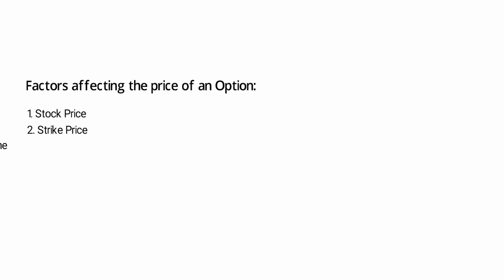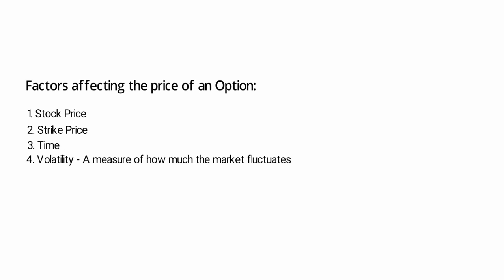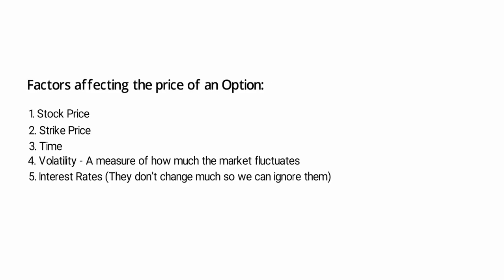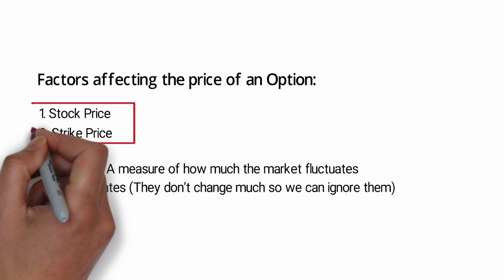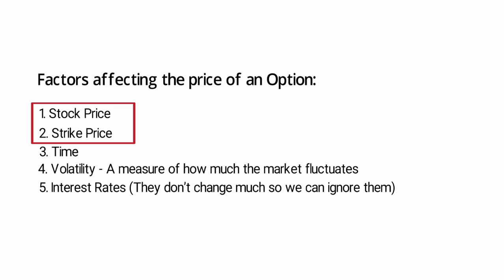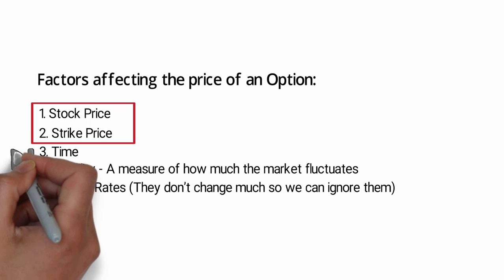There are four major things that affect the price of an option: number one, stock price; number two, strike price; number three, time; and number four, volatility, which is a measure of how much the market fluctuates. Fifth is interest rates, but since interest rates don't change much, we can comfortably ignore them. In this video we will discuss the effect of stock price and strike price. We'll discuss time and volatility in the next videos.